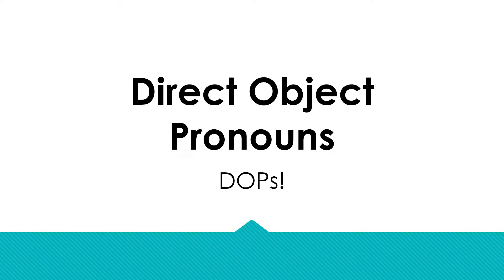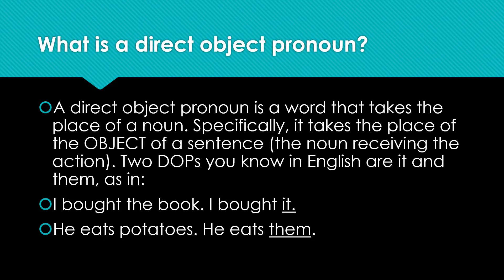So direct object pronouns. A direct object pronoun is a word that takes the place of a noun, specifically it takes the place of the object of the sentence. There's the subject and the object in a sentence, and the object is the one receiving the action.